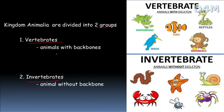What does this mean? Vertebrates are backbone animals — they have a backbone. Invertebrates are without a backbone. In this group, there is a type of skeleton and organs. We can divide vertebrates into sub-groups.